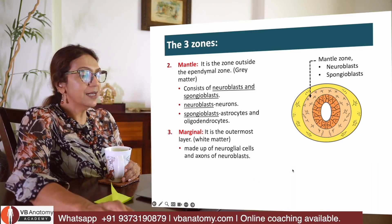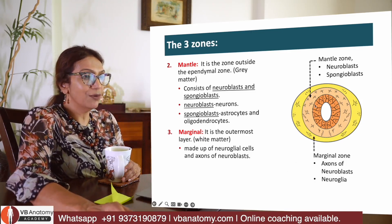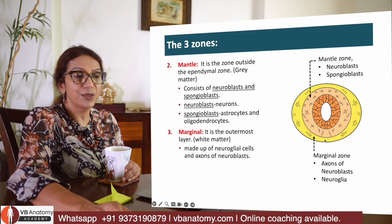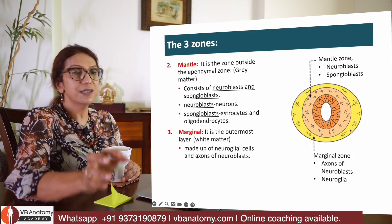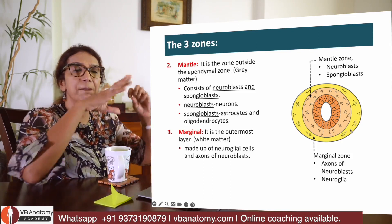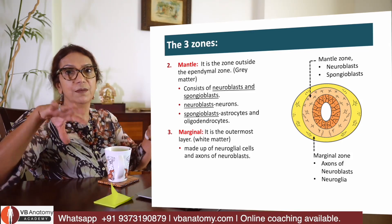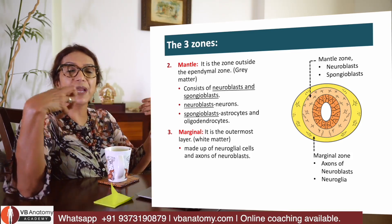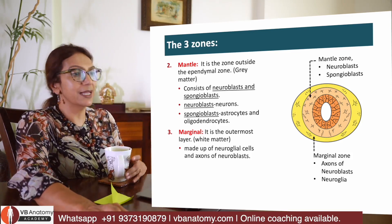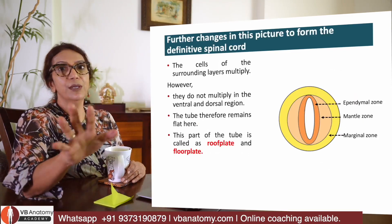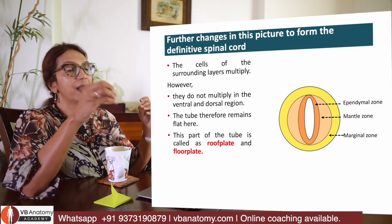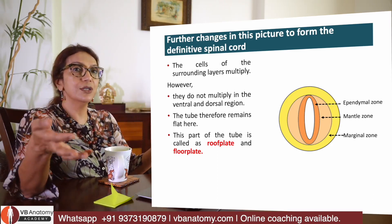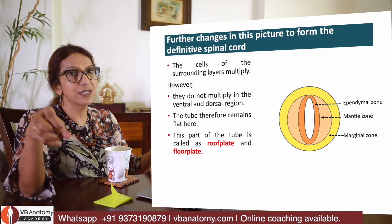The marginal zone also contains spongioblasts which will become neuroglial, but importantly it contains axons of the neuroblasts. The axons of neurons formed in the mantle zone migrate out and pack the marginal zone. This is how the marginal zone becomes packed with axons and neuroglial cells. So: mantle zone has neurons and neuroglial; marginal zone has axons of neurons and neuroglial.